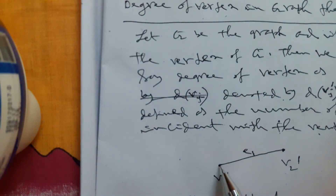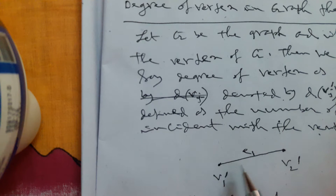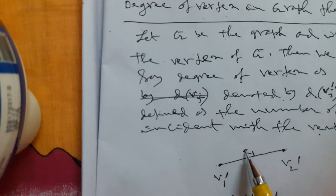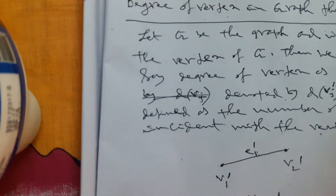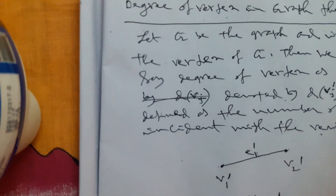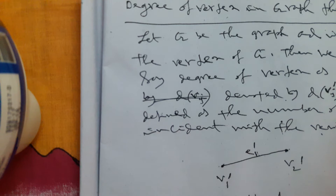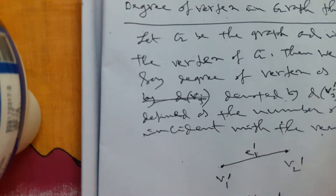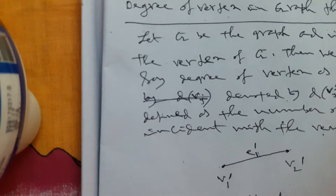Now let's see what happens with a pictorial representation. If we consider V_1 and V_2 to be two vertices incident with edge E_1, then we easily find D of V_1 is equal to D of V_2, that will be 1. So it is clear that the degree of vertex V_1 is 1 and V_2 is 1.